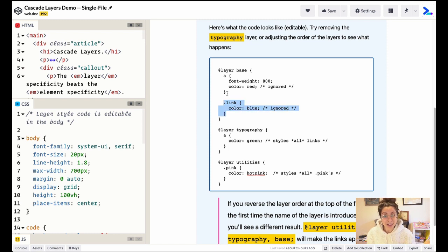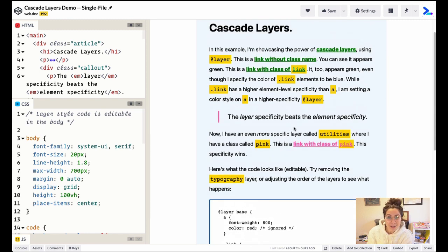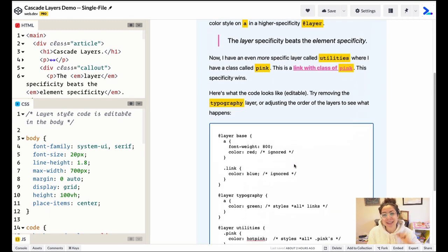So in theory dot link should override a because the selector specificity of a class is higher than a tag. So that's the first layer of base where I'm having red and blue links being applied. But if you look at this UI, there are no red or blue links. And that's because I'm using layers.